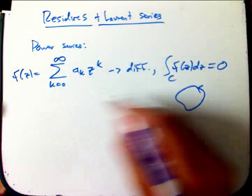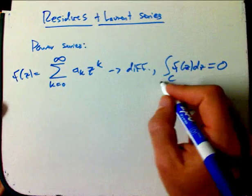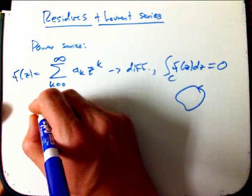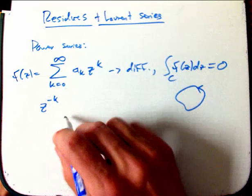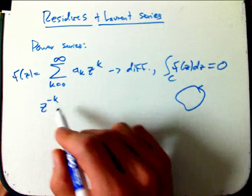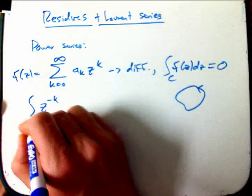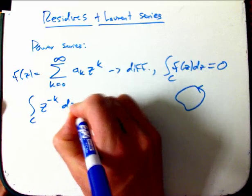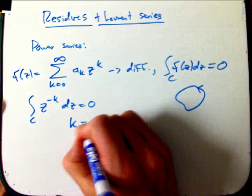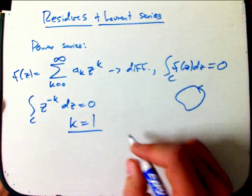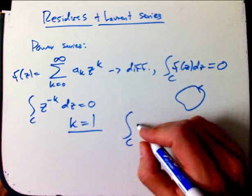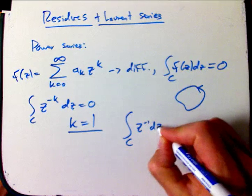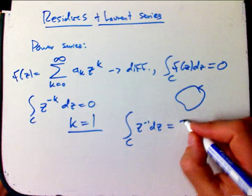Even more than that, we did some examples where even though negative powers have singularities at the origin, as long as you don't go right through the singularity, the integral of those guys was also zero, as long as k was not equal to one. The big exception was that the integral of any closed curve circling the origin of z to the minus one was 2πi.